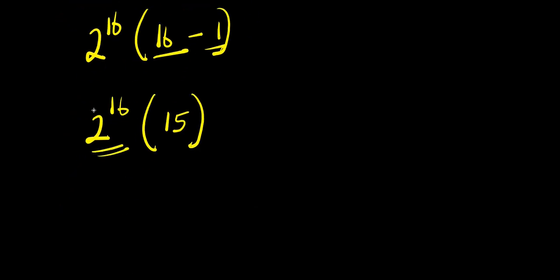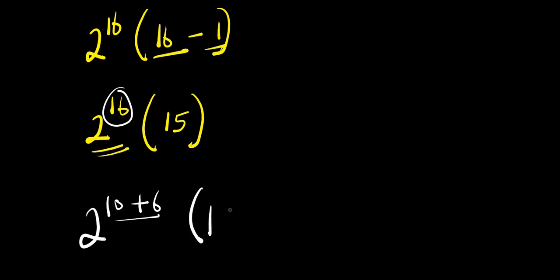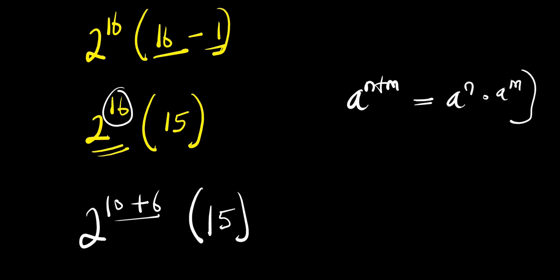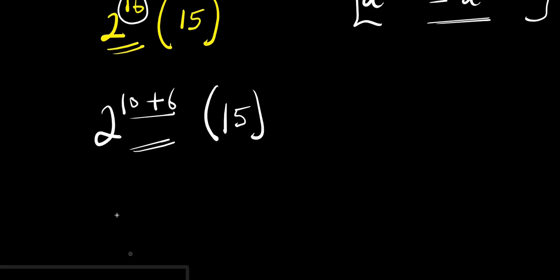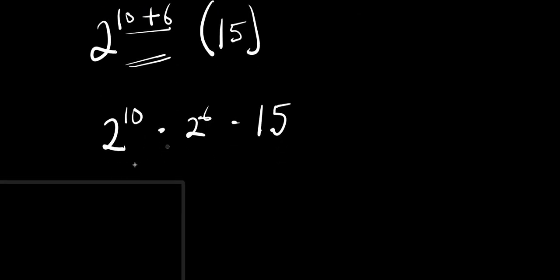So we need to find the value of 2 to the power of 16. For us to do that, I can express this 16 as the sum of 10 and 6. So I have 2 to the power of 10 plus 6 — ten plus six is sixteen — times 15. Applying the rule aⁿ⁺ᵐ = aⁿ × aᵐ, we simply have 2 to the power of 10 times 2 to the power of 6, times 15. And 2 to the power of 10 — you can express it as 2 to the power of 5.